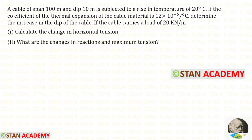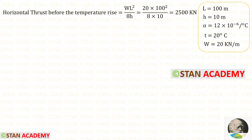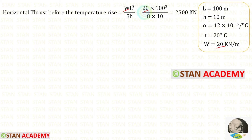Now we are going to calculate the change in horizontal tension and the changes in reactions and maximum tension, if the cable carries a load of 20 kilo Newton per meter. Using this formula, we can find the horizontal thrust before the temperature rise. W is 20, L is 100, h is 10. After the calculation, we will get 2500 kilo Newton.